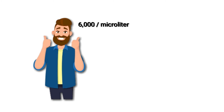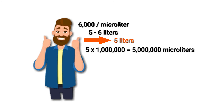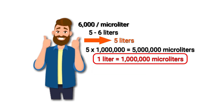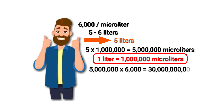We know a healthy adult individual has approximately 5 to 6 liters of blood in their circulatory system. In this particular case, let's say the person has 5 liters of blood. 5 multiplied by 1 million equals 5 million microliters, because each liter equals 1 million microliters. 5 million microliters multiplied by 6,000 equals 30 billion white blood cells — that is the estimated number of white blood cells in 5 liters of blood. But that is just an estimation; the real number can be different.